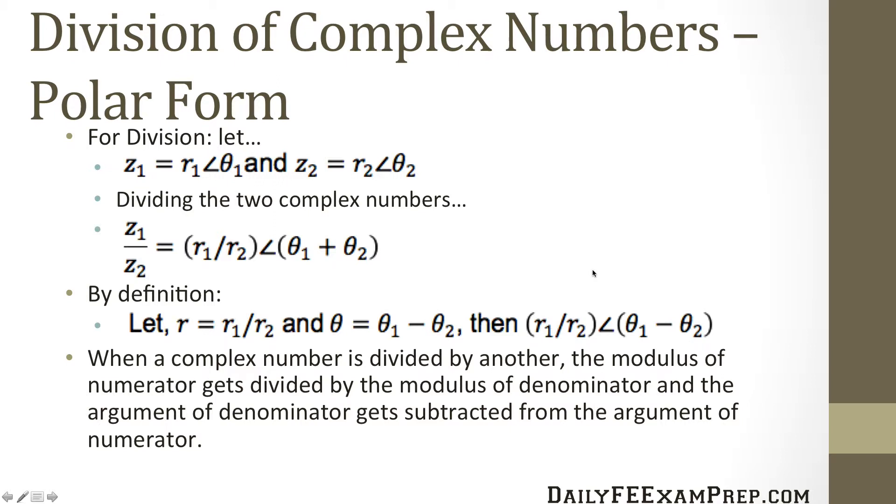When a complex number is divided by another, the modulus of the numerator gets divided by the modulus of the denominator, and the argument of the denominator gets subtracted from the argument of the numerator.